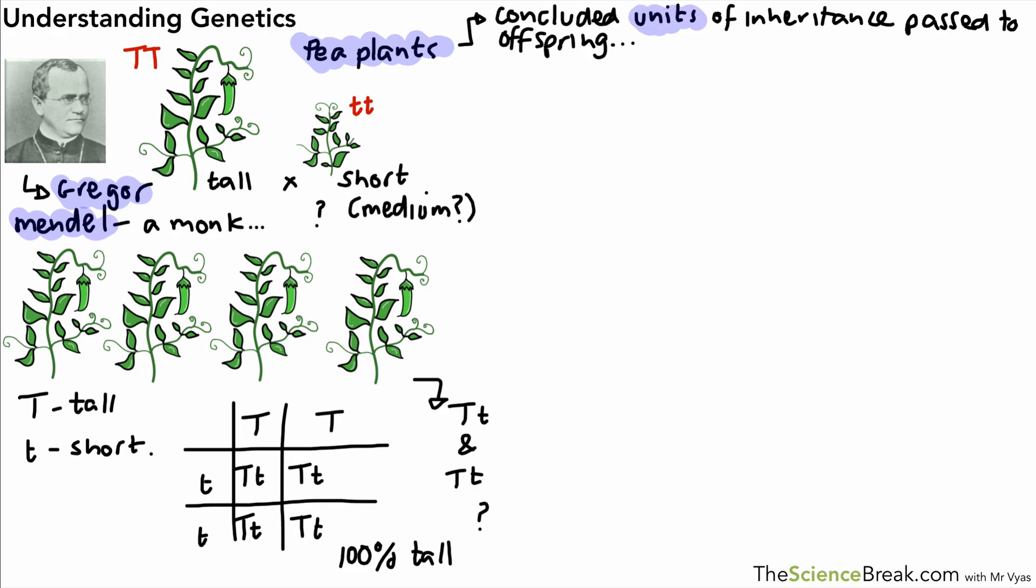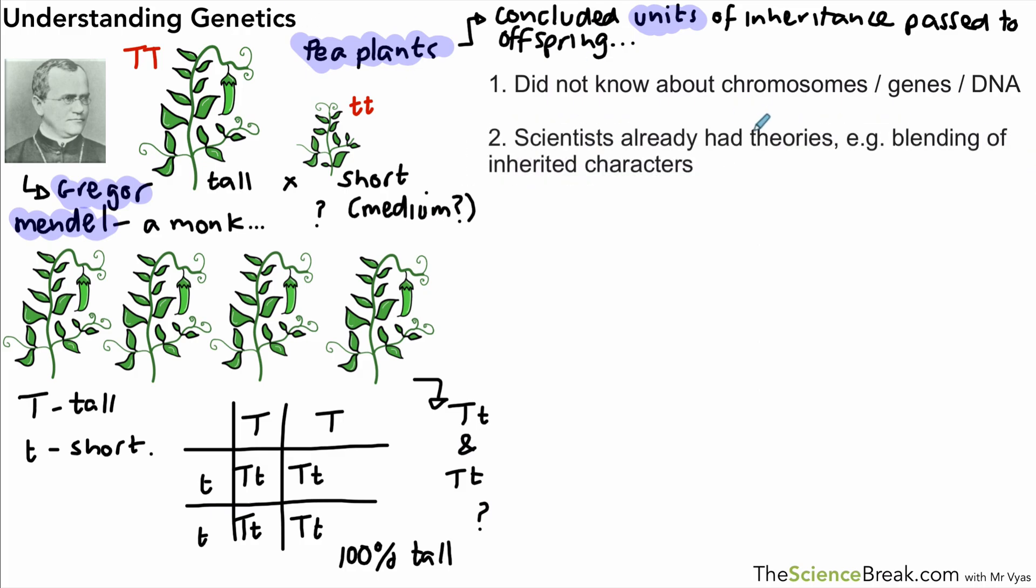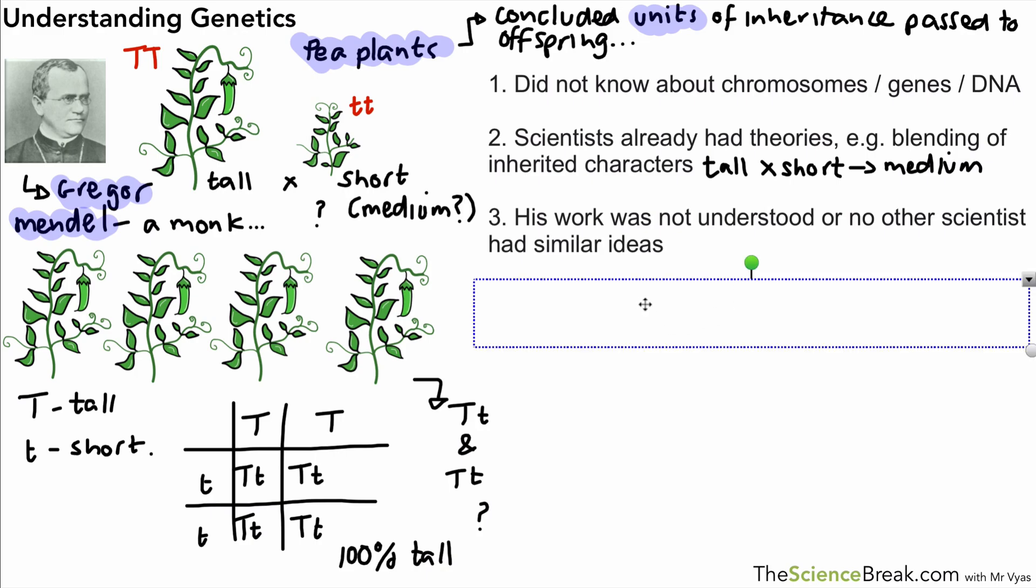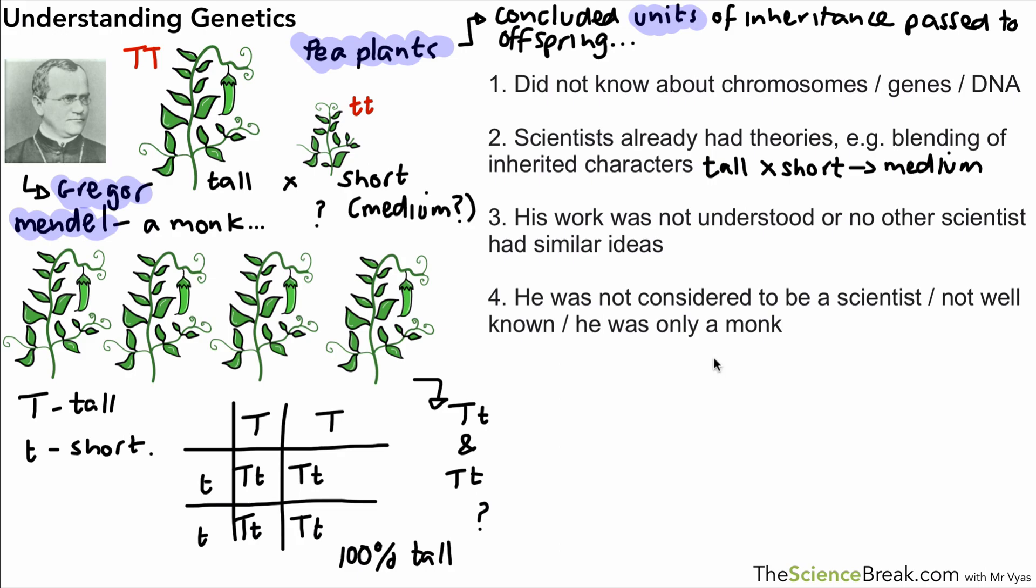Now, his work actually wasn't appreciated in his lifetime for a whole variety of reasons. The first one was that scientists, or in fact no one, knew about chromosomes or DNA or genes. There were already theories of how things were or how features were inherited. For example, if you crossed a tall plant with a short plant, you would probably end up with a medium-sized plant or a plant which has a height somewhere in between. His work was quite complex at the time, and even other scientists did not have similar ideas to that. He was not considered a scientist because he actually wasn't a scientist, so he was not well known.